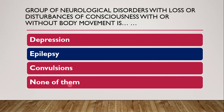The correct answer is epilepsy. Why not convulsion? Because convulsion is a single phenomenon that is occurring, and epilepsy can be called multiple convulsions — it is a group of neurological disorders. So it is epilepsy.